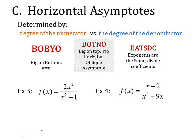The third thing we're going to be looking for are horizontal asymptotes. Now, the way you know about horizontal asymptotes is by looking at the power of x, or also known as the degree of the numerator versus the degree of the denominator. It's all about the power of x. And you look through this lens. You think, is it BOBYO, BOTNO, or EATSDC?